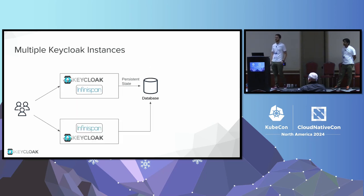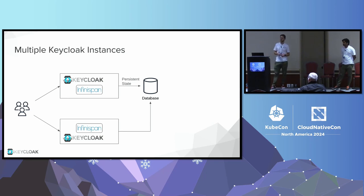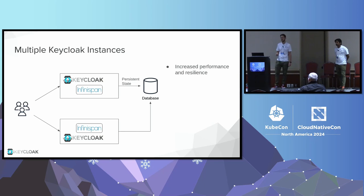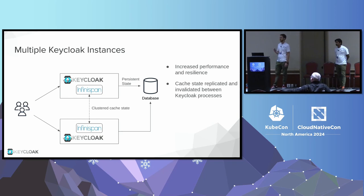In production, people typically utilize multiple Keycloak instances. With two or more Keycloak pods talking to a persistent database, you can horizontally scale as requirements demand. Adding extra instances gives increased performance through parallelism and the resilience we're talking about today. However, this introduces the complication of ensuring that the cache maintained by all Keycloak instances is both updated and invalidated as required when state changes.